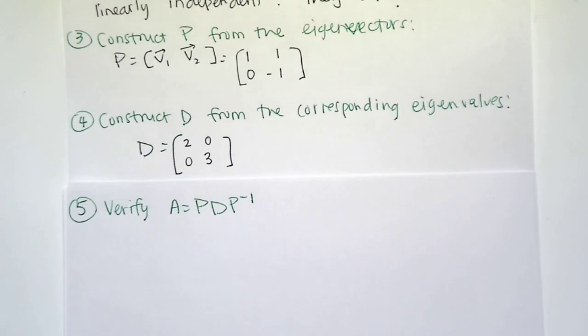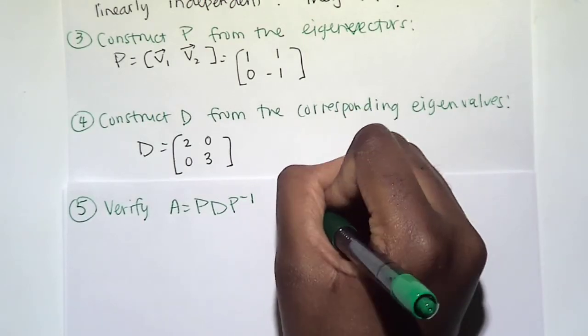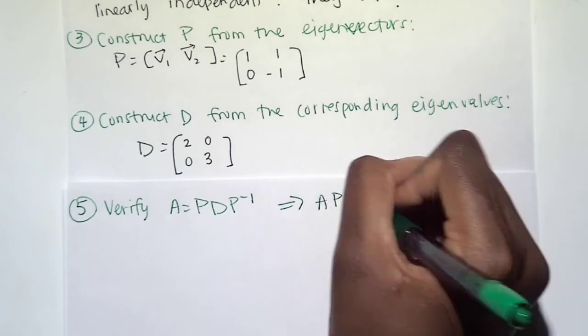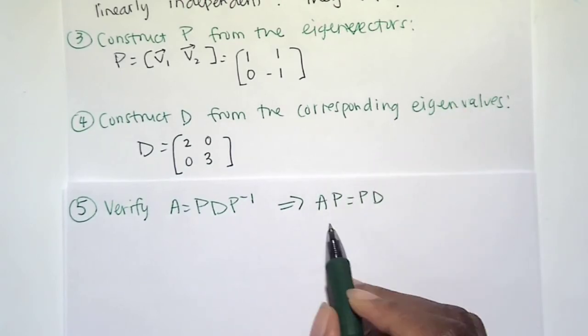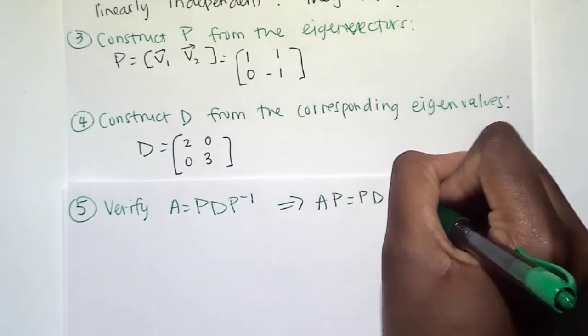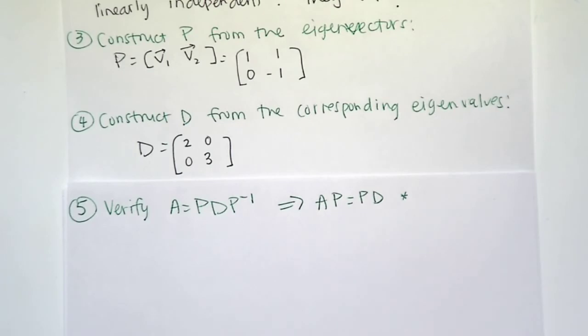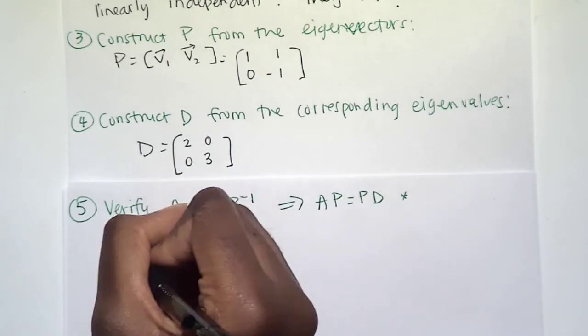And as we get bigger and bigger matrices, it may be very difficult to find P inverse. You could also instead verify that AP equals P, D. And I typically do this one because it's easier than finding the inverse, but you can do whichever you want.